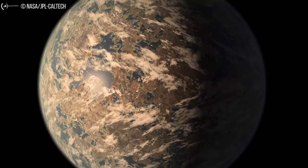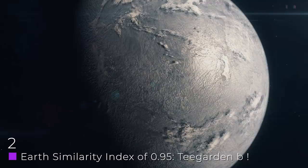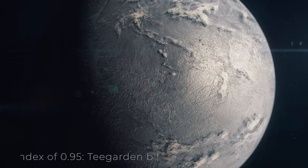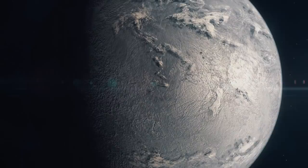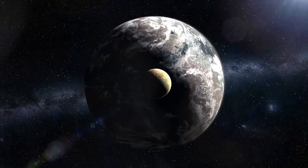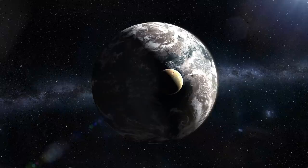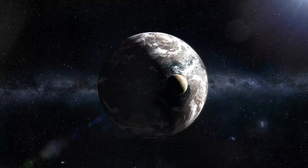Second place, with an Earth similarity index of 0.95, Teegarden b. Teegarden b is an exoplanet found orbiting within the habitable zone of Teegarden's star, an M-type red dwarf in the constellation Aries, about 12 light years from the solar system. Teegarden b, discovered in July of 2019, is the innermost known planet orbiting Teegarden's star, with an orbital period of just 4.9 days and an average distance of 0.025 AU.